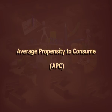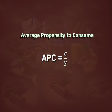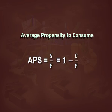Average propensity to consume (APC). APC is defined as the ratio of aggregate consumption to aggregate income in a given period of time. Thus, APC = C/Y. Therefore, APS = S/Y = 1 - C/Y. APC tells us what proportion of total cost of a given output may be recovered from selling consumer goods, while APS tells us what proportion will have to be recovered by the sale of capital goods.